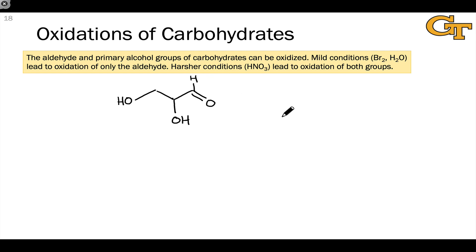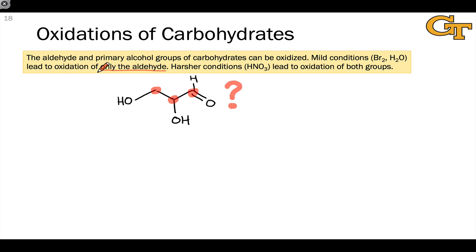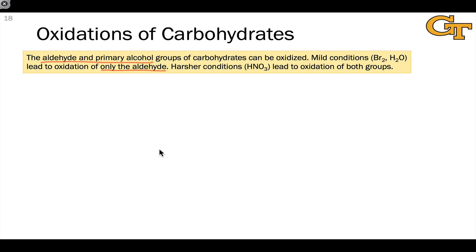We can oxidize the aldehyde to a carboxylic acid, the secondary alcohol to a ketone, or the primary alcohol to an aldehyde or carboxylic acid. So there are three sites for potential oxidation in this triose, and the situation gets more complicated with larger sugars. Selective conditions have been developed to oxidize only the aldehyde under relatively mild conditions, or to oxidize both the aldehyde and the primary alcohol group on the other side of the monosaccharide. It's possible to avoid oxidation of the secondary alcohols because they're more sterically hindered than the primary alcohol and the aldehyde groups.